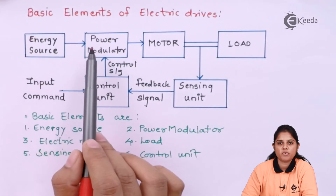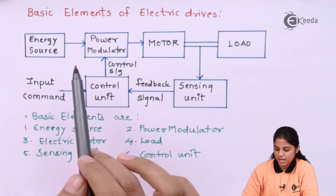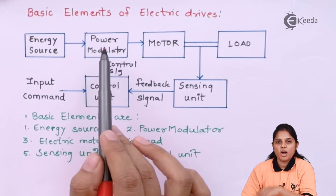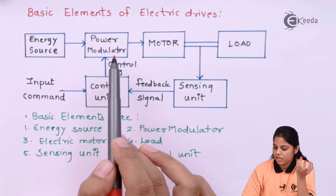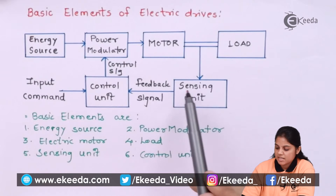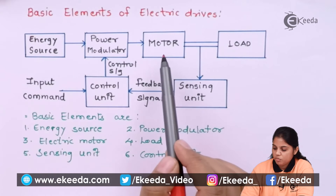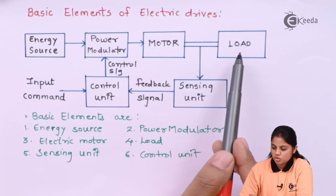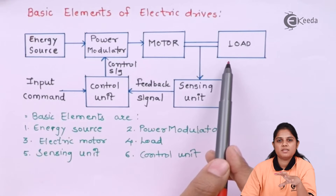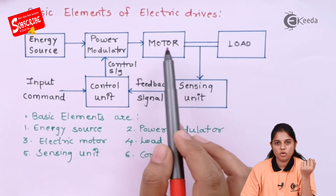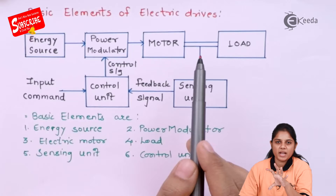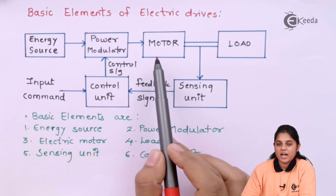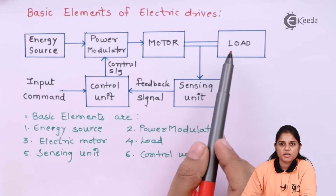You need to provide some kind of energy to run the complete mechanism — that is the energy source. Then you have the power modulator, which modulates the energy to be given to the load. How you modulate and on the basis of what is sensed by the sensing unit. The sensing unit is connected between the motor and the load. The motor drives the load, and to control the load mechanism, you change the speed of the motor, and ultimately the motor takes action as per the requirement.